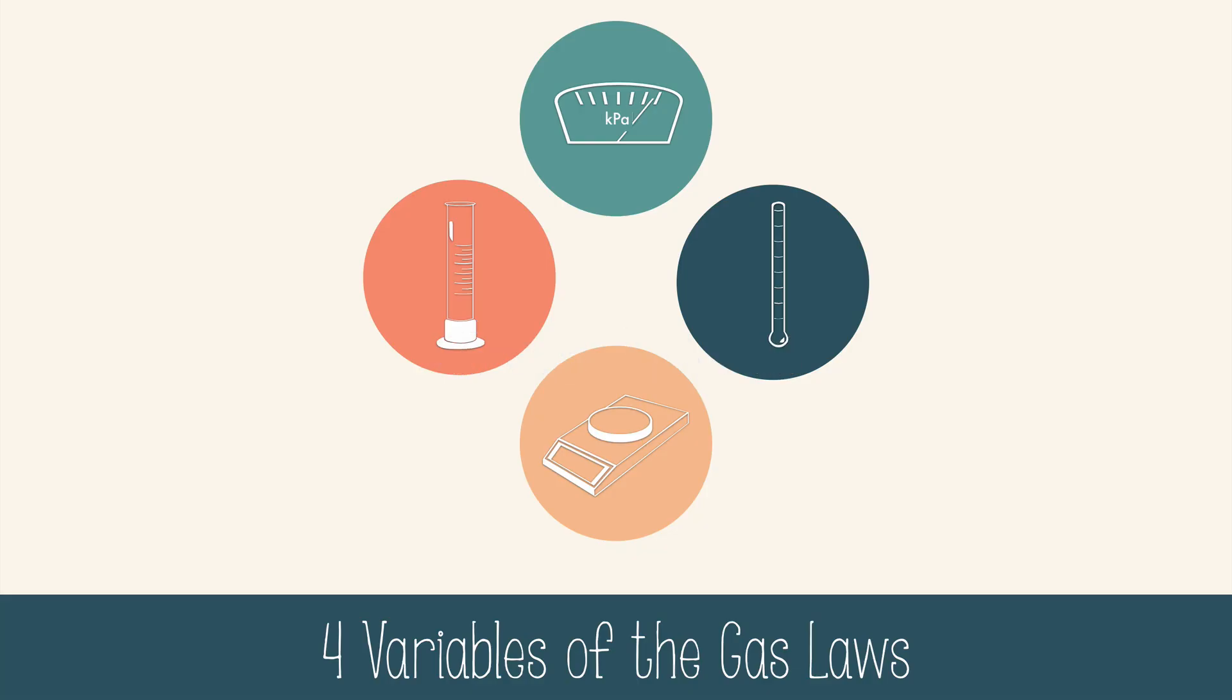There are four variables that are manipulated in the different gas laws: pressure, temperature, volume, and moles. To see how one variable affects another, we have to hold the other two variables constant when we test them.